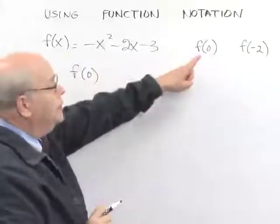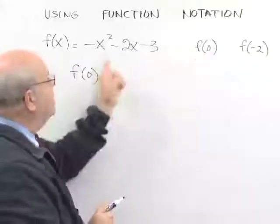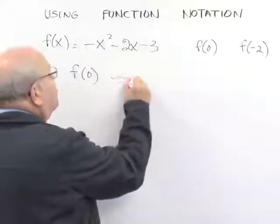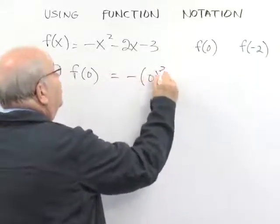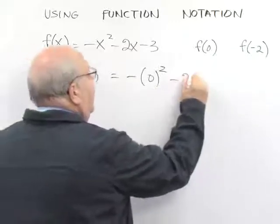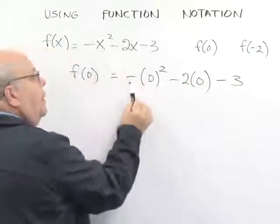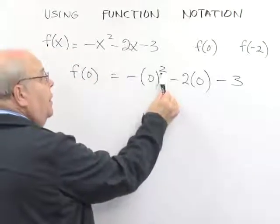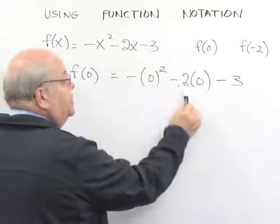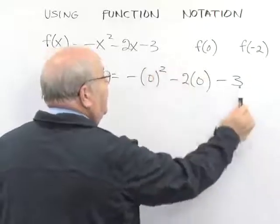What is the function value if x has the value 0? So, we're going to replace x by 0 in each part of the expression. Minus x squared is minus 0 squared, minus 2 times x is minus 2 times 0, and then minus 3.